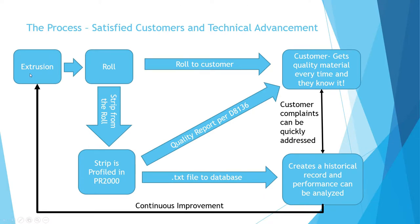Here's the basic flowchart. You've done your extrusion, you've made a roll, you take a strip from that roll, and it's profiled in the PR2000 before you send the roll to your customer. The PR2000 generates a quality report for your customer — you know you're sending your customer quality. At the same time, a CSV file is generated and goes to your central database, creating a historical record of everything you've made and shipped. Performance can now be analyzed for continuous improvement, so you can see if line one is performing better than line two, make a better extrusion, which means a better roll going to the customer, and more customers.